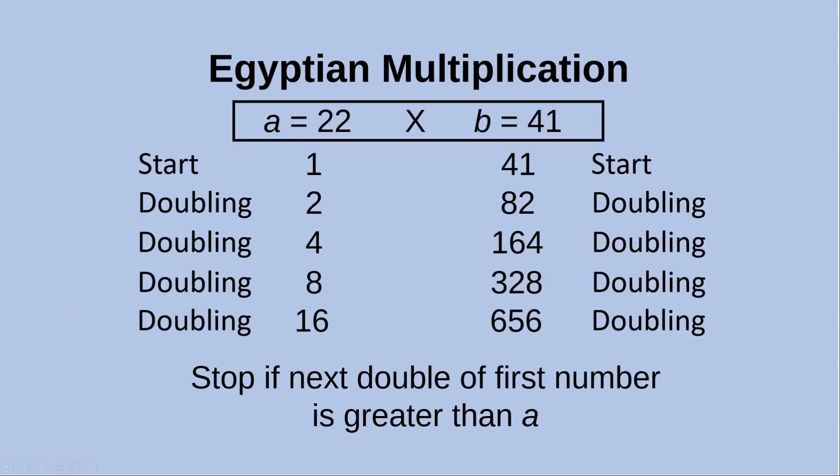Let's see an example. Suppose I want to do 22 times 41. The first number is called a which is 22, and the second one is b which is 41. In the first step I start with 1 in my first column, then do the doubling of the previous number in each column. So 1 becomes 2 in the first column, and when I multiply 41 in the second column by 2 I get 82.